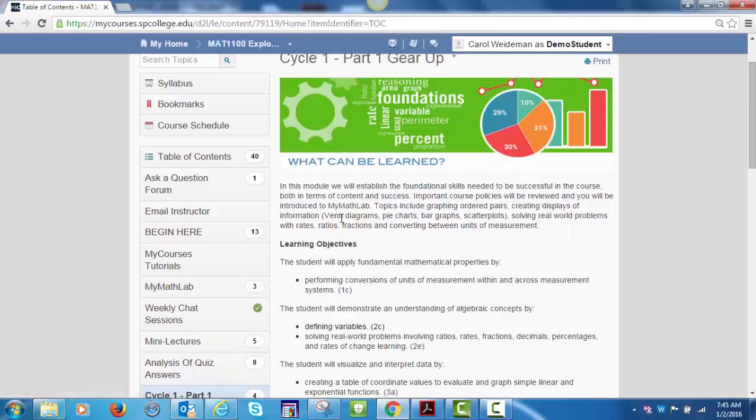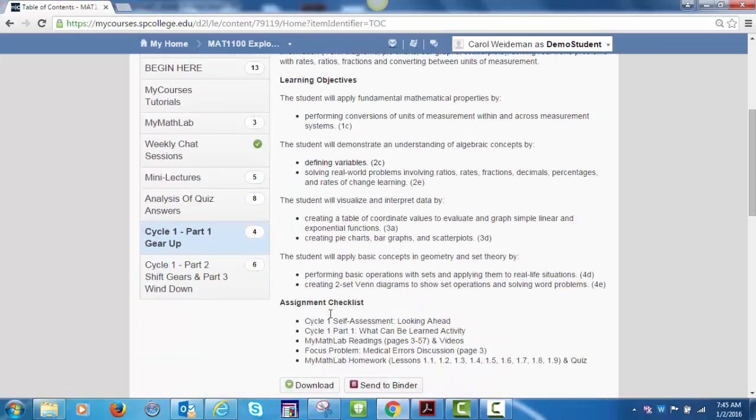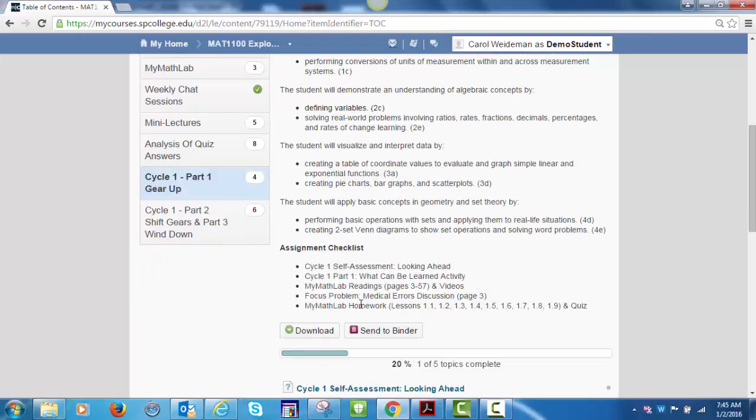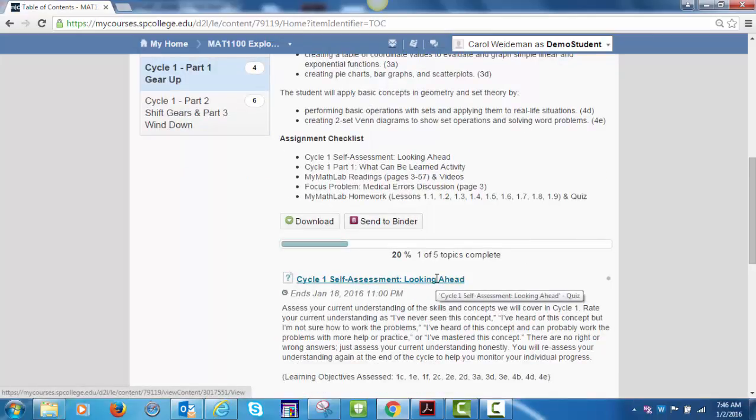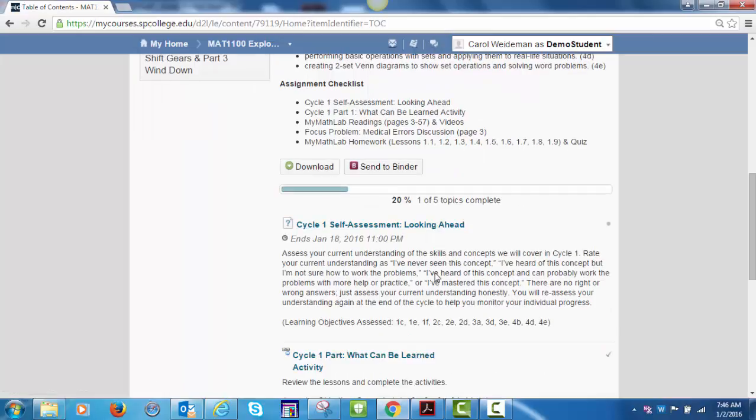Cycle 1 is shown below. Each cycle module includes an introduction, the learning objectives covered, and an assignment checklist. Notice that some assignments are completed in MyCourses—self-assessments, discussions, cycle activities—while other assignments are available in MyMathLab. The looking ahead and looking back self-assessments will help you assess your current understanding of the skills and concepts covered in the module. Each cycle contains a learning activity that reviews key concepts.